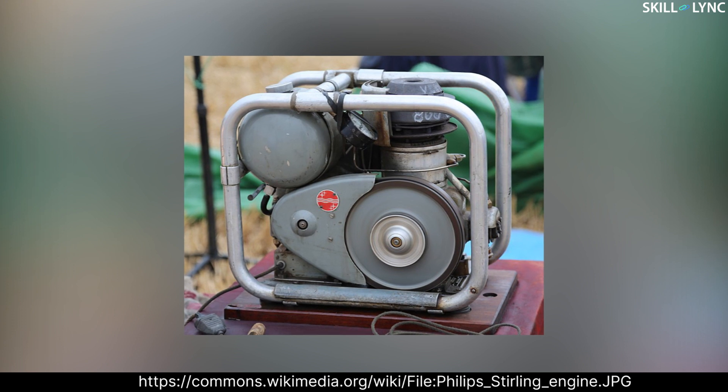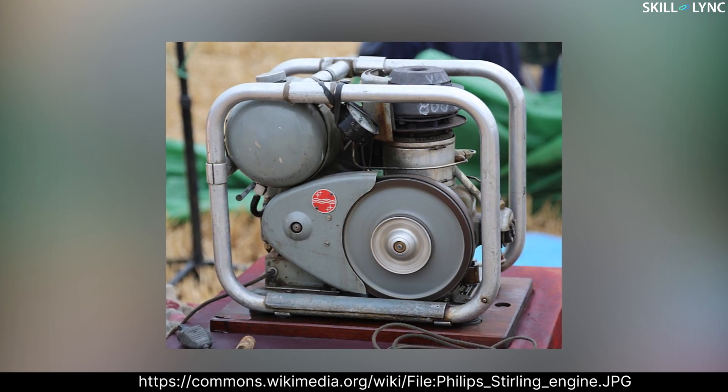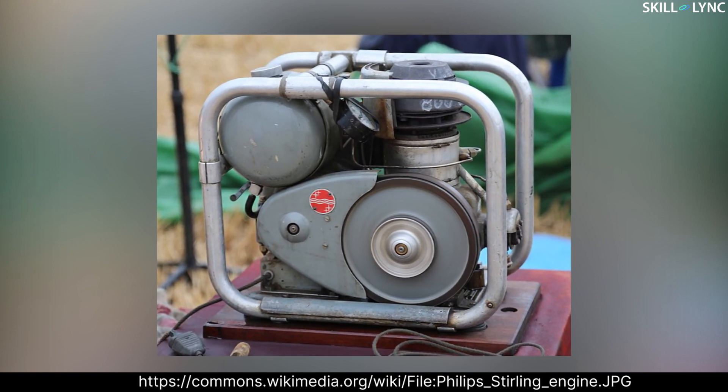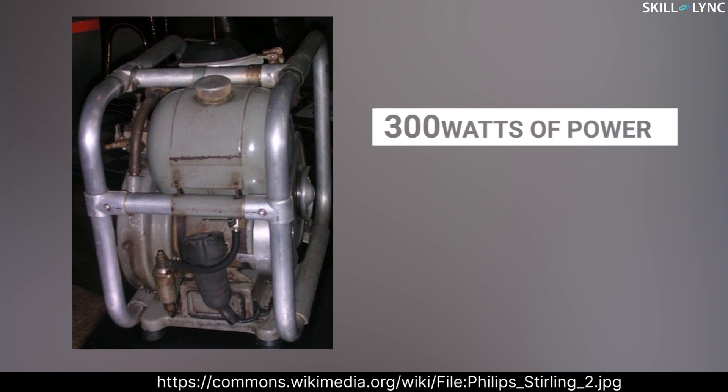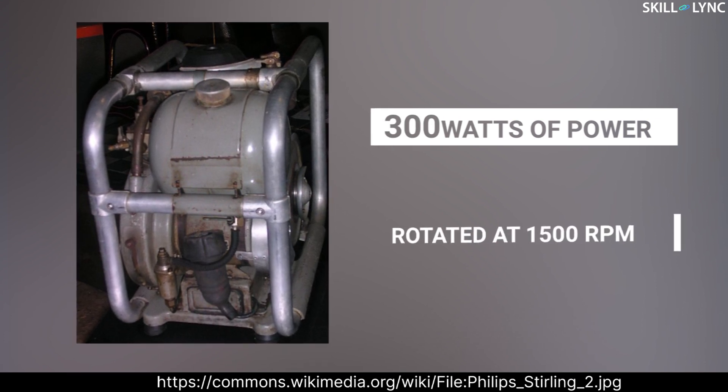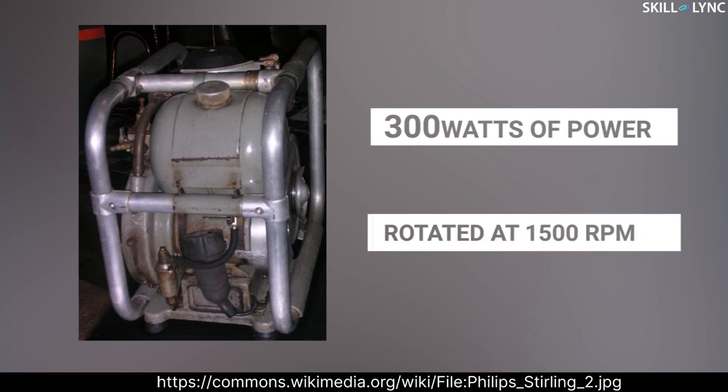The Stirling engine was brought back to life in 1952 when Philips released a small Stirling engine generator powered by wood shavings. This generator was able to produce 300 watts of power and rotated at 1500 RPM. However, this project was a huge failure for Philips, as many people opted for more powerful and compact petrol generators.